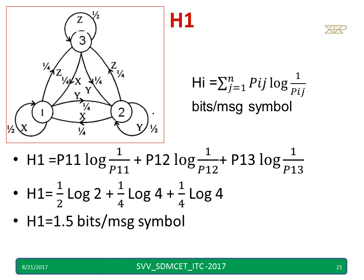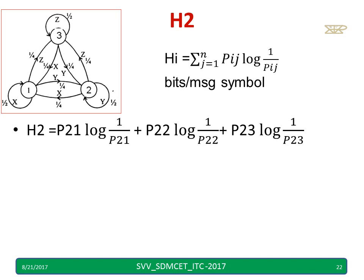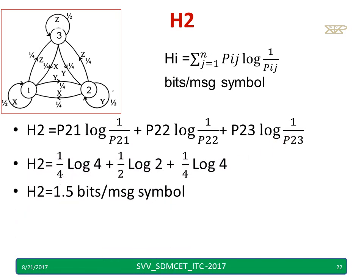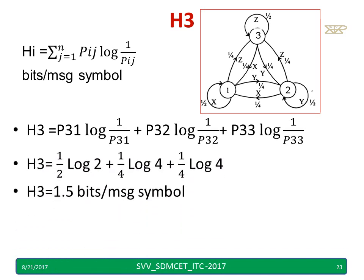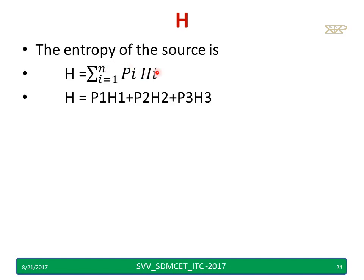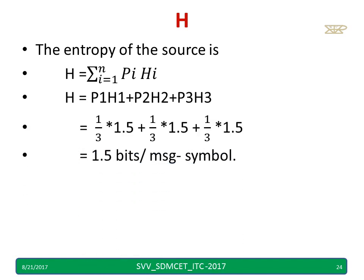Can you calculate H2 and H3? Pause and calculate. H2 uses the same equation with transition probabilities from state 2 — P21, P22, P23. The answer for H2 is 1.5 bits per message symbol. Similarly, H3 uses probabilities P31, P32, P33, and H3 is also 1.5. The total source entropy H = sum of P(i) × H(i). Filling in P1 = P2 = P3 = 1/3 and H1 = H2 = H3 = 1.5, the answer is H = 1.5 bits per message symbol.